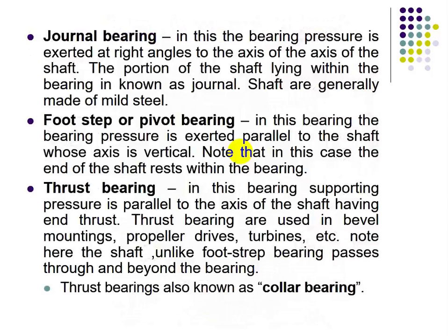In a journal bearing, the pressure is exerted at right angles to the axis of the shaft. The portion of the shaft lying within the bearing is known as the journal. The shaft is generally made of mild steel. In a footstep or pivot bearing, the bearing pressure is exerted parallel to the shaft axis, which is vertical.